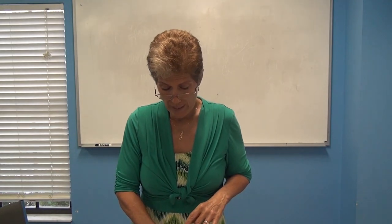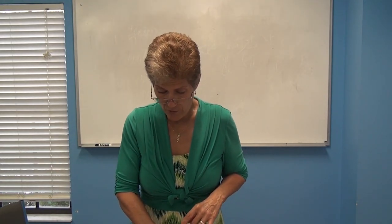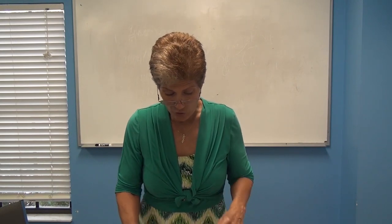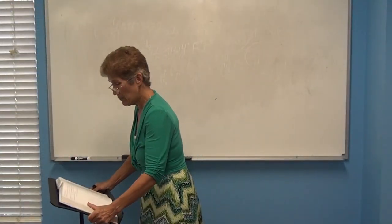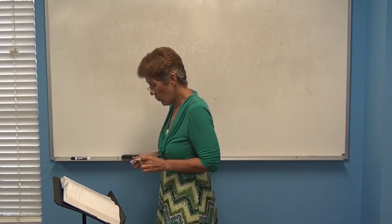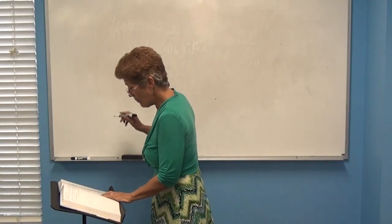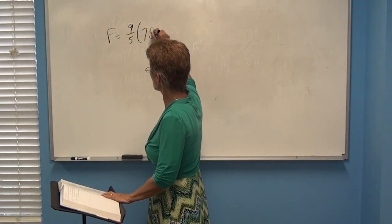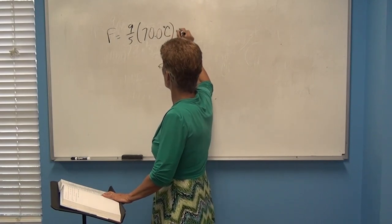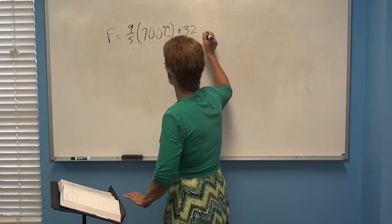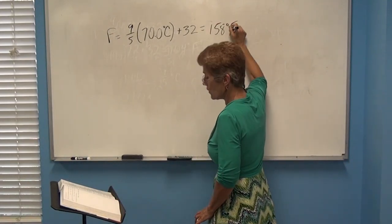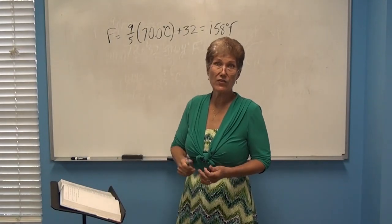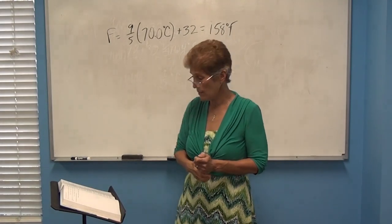Number nine: the temperature of a liquid is 115 degrees Fahrenheit, and the temperature of another sample of the same liquid is 70 degrees Celsius. Which liquid's molecules are moving faster? To compare them, convert both to the same scale. Converting 70°C to Fahrenheit: (9/5)(70) + 32 = 158 degrees Fahrenheit. Comparing 158°F to 115°F, the 70°C sample is hotter, so those molecules are definitely moving faster.